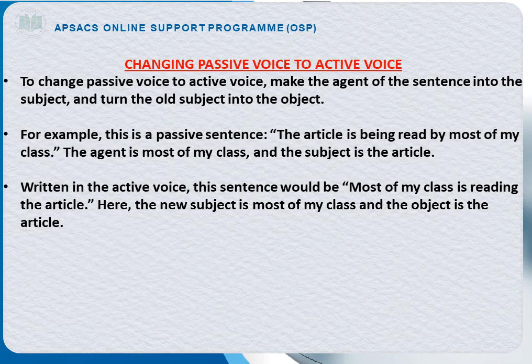Let's have a look at the concept of changing passive voice to an active voice. To change passive voice to active voice, make the agent of the sentence into the subject and turn the old subject into the object. For example, this is a passive sentence: 'The article is being read by most of my class.' The agent is 'most of my class' and the subject is 'the article.' When written in active voice, it becomes: 'Most of my class is reading the article.'